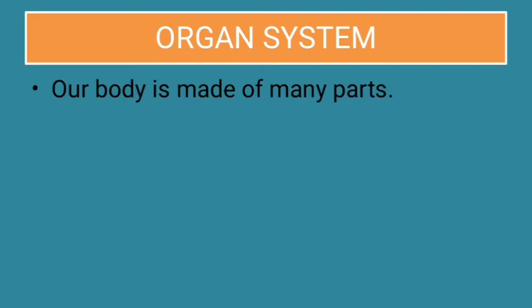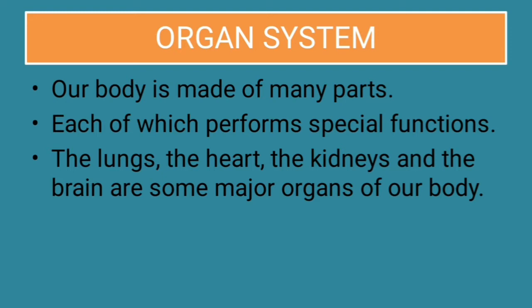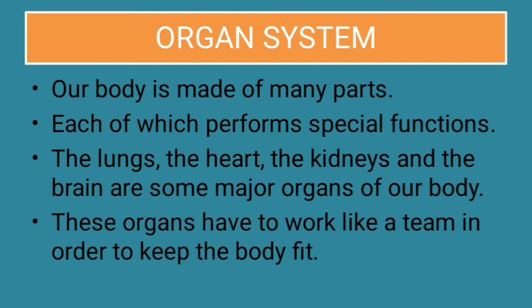Organ system. Our body is made up of many parts, each of which performs a special function. The lungs, the heart, the kidney, and the brain are some major organs of our body. These organs have to work like a team in order to keep the body fit. For example, if one organ doesn't support another organ, the body will not function properly. It is just like a cricket team — if some players don't play properly, it will affect the performance of the entire team.